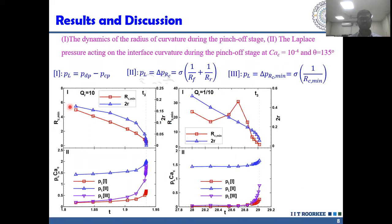The local minimum radius of curvature, rcmin, and neck width 2R are two critical dynamic characteristics of the interface curvature governing the droplet break-up. The value of Laplace pressure is responsible for the droplet pinch-off and it is calculated using three approaches shown here. Both rcmin and 2R show qualitatively similar trends, that is decreasing with time for Qr equal to 10.